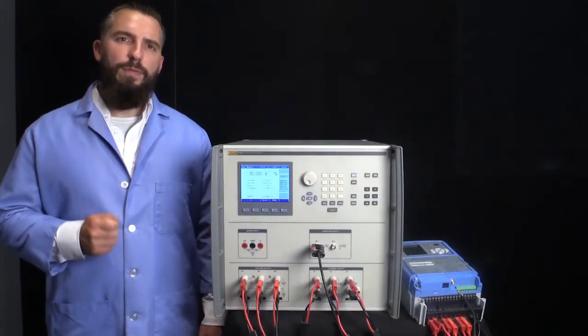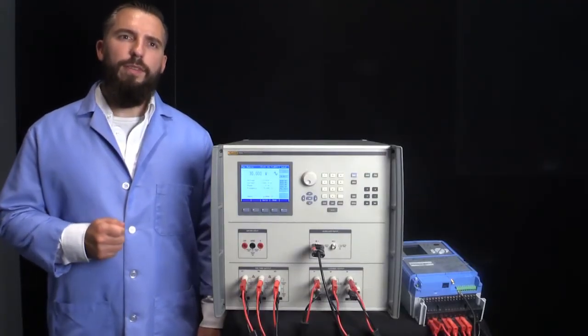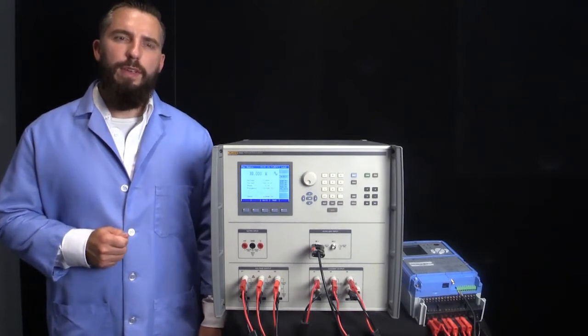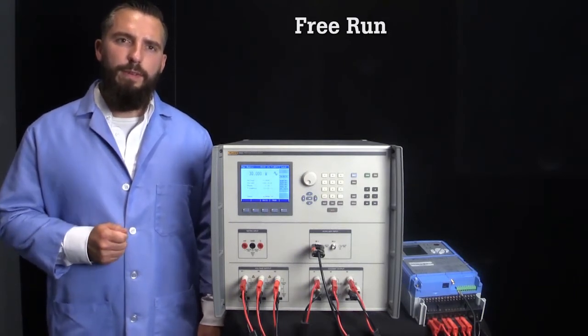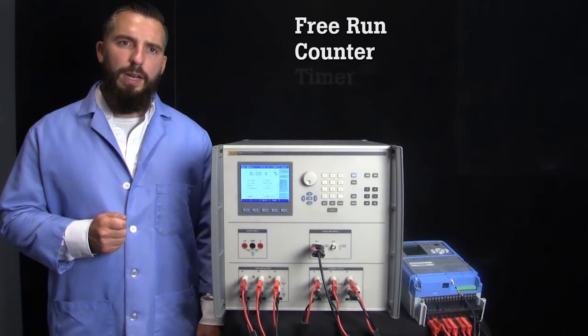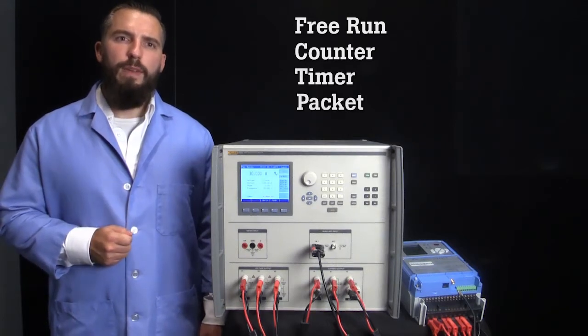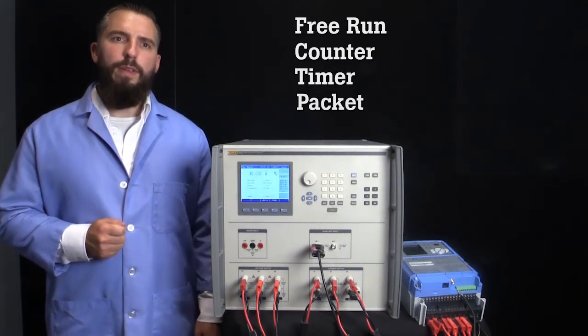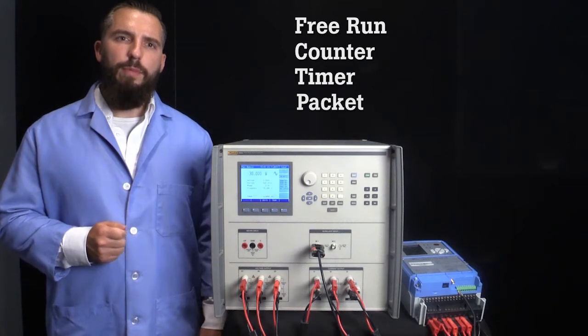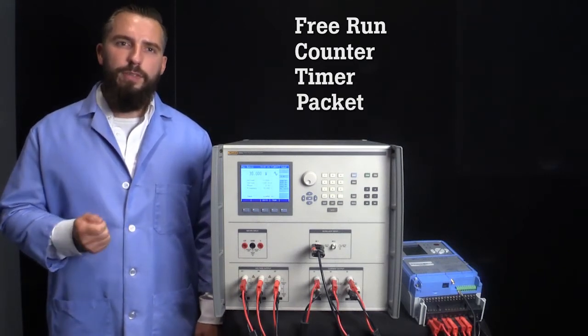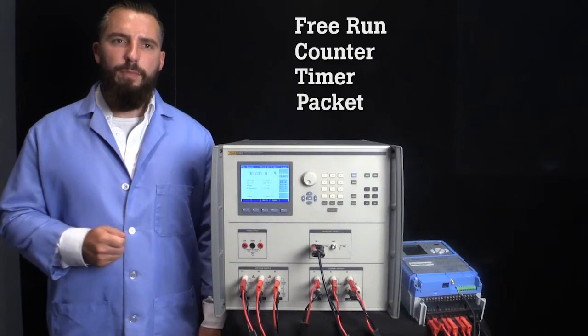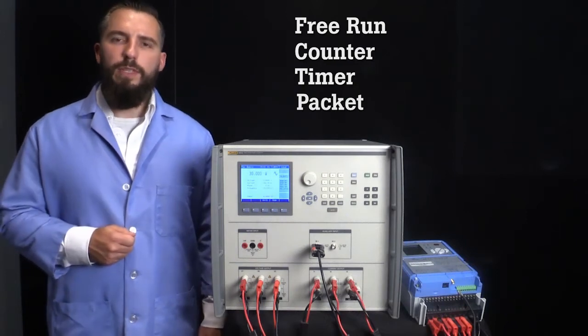The 6003A has four energy testing modes that allow you to test a variety of energy meters. Those modes are free run, counter, timer, and packet. All of these modes provide a way of easily configuring a test to output a precise power level. In return, the energy meter will provide a watt-hours measurement. Let's discuss these modes in more detail.